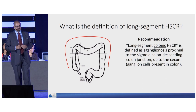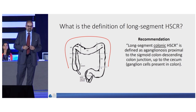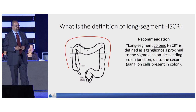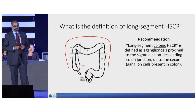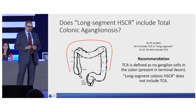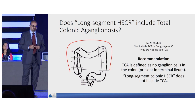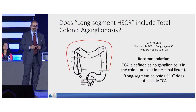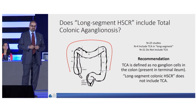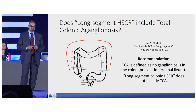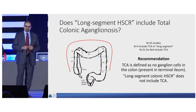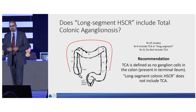Our recommendation is that we use the term long-segment colonic Hirschsprung disease, defined as aganglionosis that is proximal to the sigmoid colon and descending colon junction up to the cecum with ganglion cells present in the colon. Regarding whether long-segment includes total colonic aganglionosis: four of 25 studies included total colonic in long-segment and 21 did not. Our recommendation is that total colonic is defined as no ganglion cells in the colon but present in the terminal ileum, and that long-segment colonic Hirschsprung disease does not include total colonic aganglionosis.